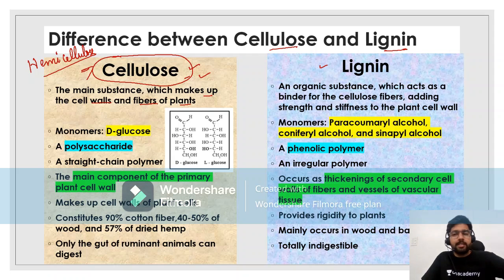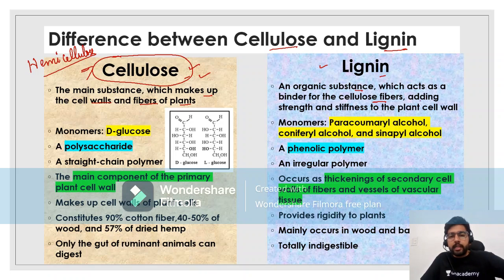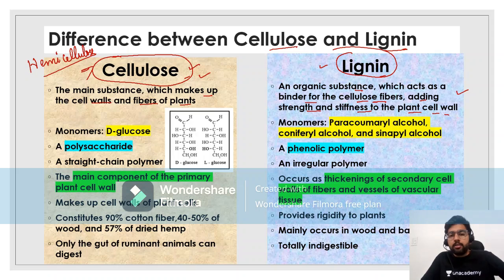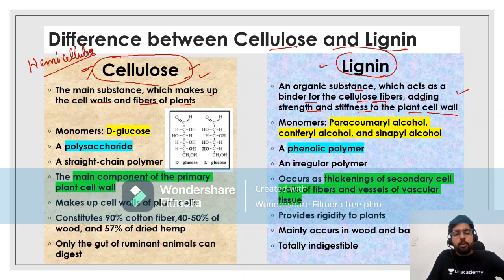What about lignin? Lignin is an organic substance which acts as a binder for the cellulose fibers, adding strength and stiffness to the plant cell wall. The role of lignin is to act as a binder — it helps in joining the cellulose fibers and adding strength and stiffness to the plant cell wall.